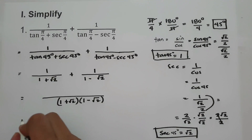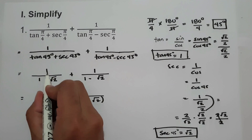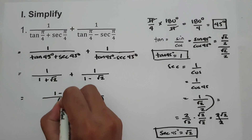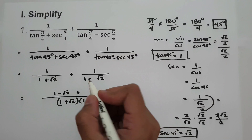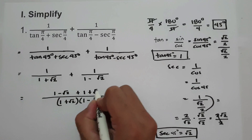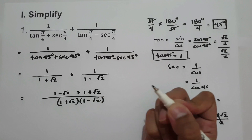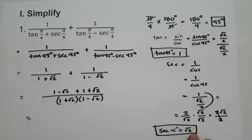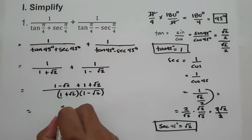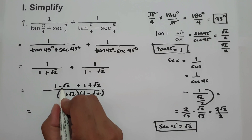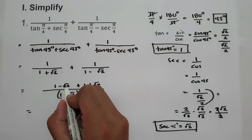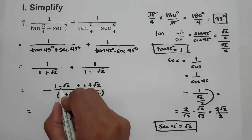Let us simplify the numerator. 1 times (1 − √2) gives 1 − √2, plus 1 times (1 + √2) gives 1 + √2. Combining: 1 + 1 equals 2, and −√2 plus √2 equals 0. So the numerator simplifies to 2.